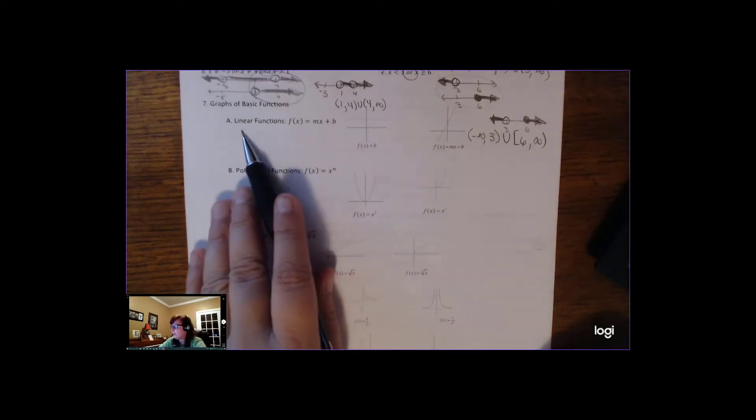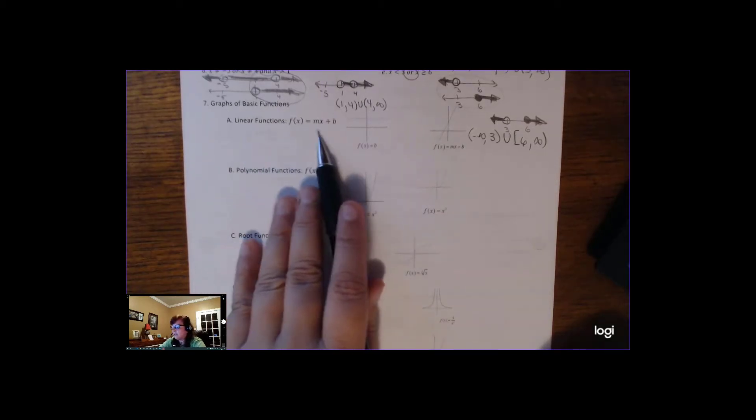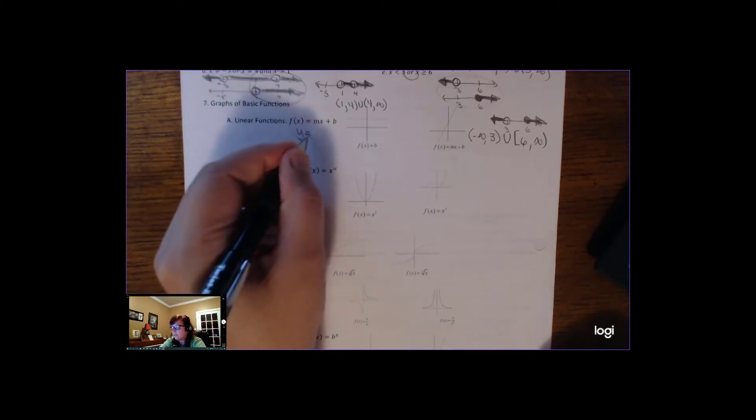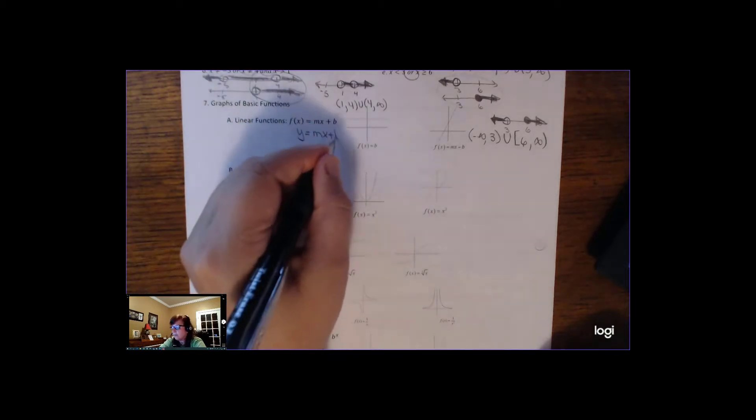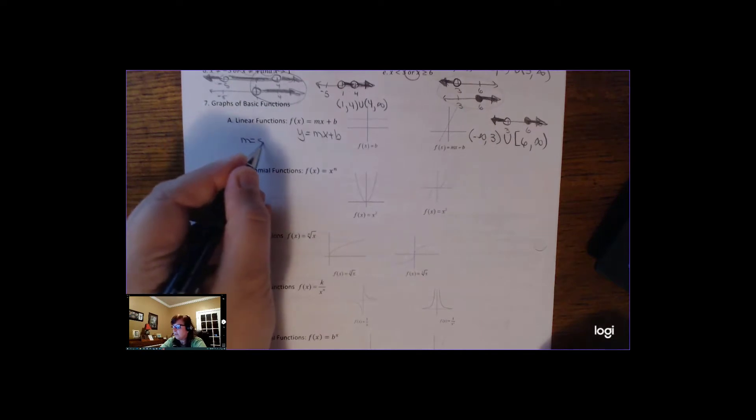So you have to know the graphs of your basic functions. A linear function is in the form of f of x equals mx plus b. You might remember y equals mx plus b. m is the slope and b is the y-intercept.